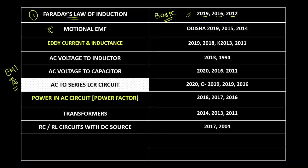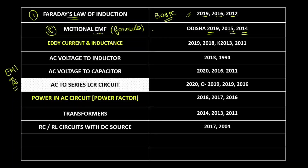The second topic is motional EMF. Motional EMF is also formula-based — it is ε = -dΦ/dt. They have been asking this question as well, so this is a decent and super important topic. Just check this formula-based question, go through it; it's a simple direct formula, just apply it.